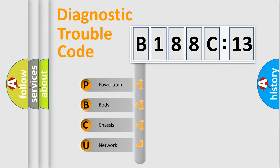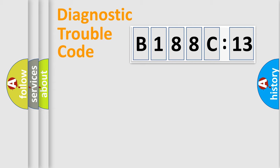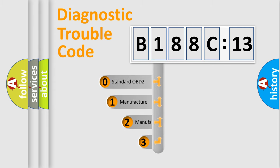We divide the electric system of automobile into four basic units: Powertrain, Body, Chassis, and Network. This distribution is defined in the first character code.